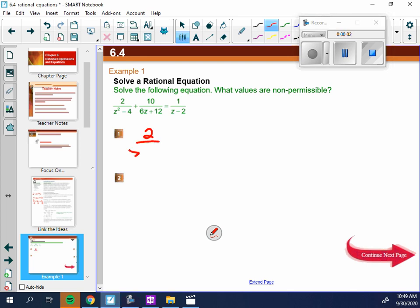We have 2 over z squared minus 4 plus 10 over 6z plus 12 equals 1 over z minus 2. So I know what it's equal to as an expression, but I still have it equals something. Now, if I have that equal sign,